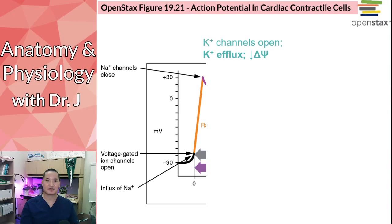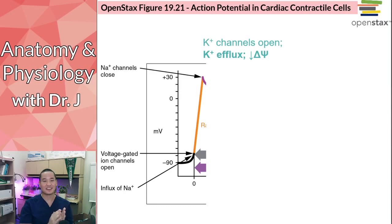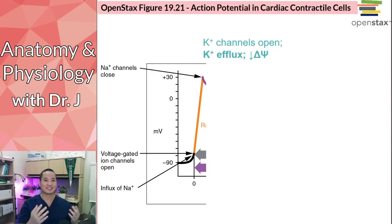When potassium channels open in the pacemaker cells, the potassium ions leave — this is what we call efflux. Influx and efflux might be new vocabulary words: influx means going into the cell, efflux means exiting the cell. So influx in, efflux out.